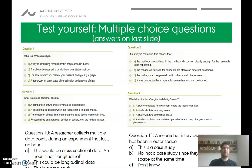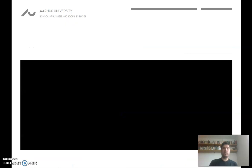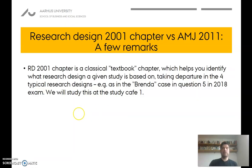That was the quick walkthrough. There's a multiple choice question you can try — the answers are on the last slide. In the next video I'll go to the AMJ paper. This was a classical textbook chapter giving a broad overview; the next video will go more in depth on particular, more advanced challenges that research designs can face.